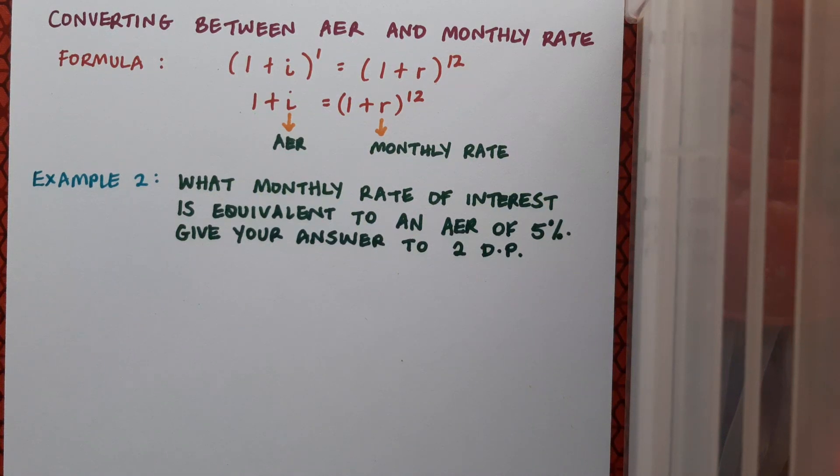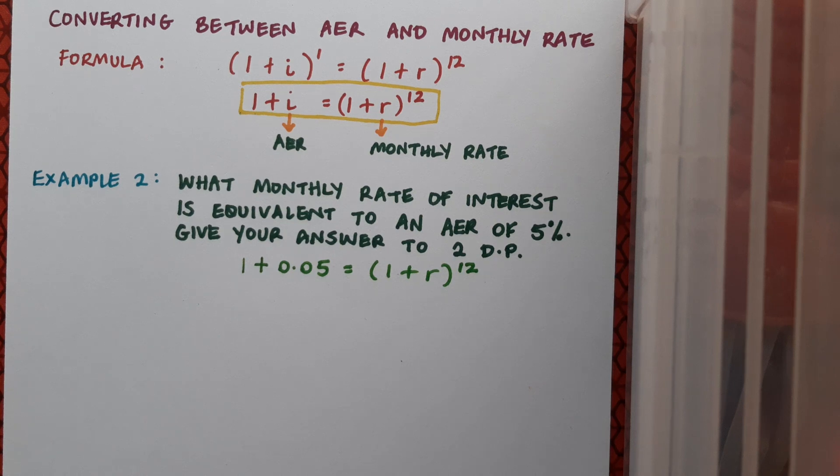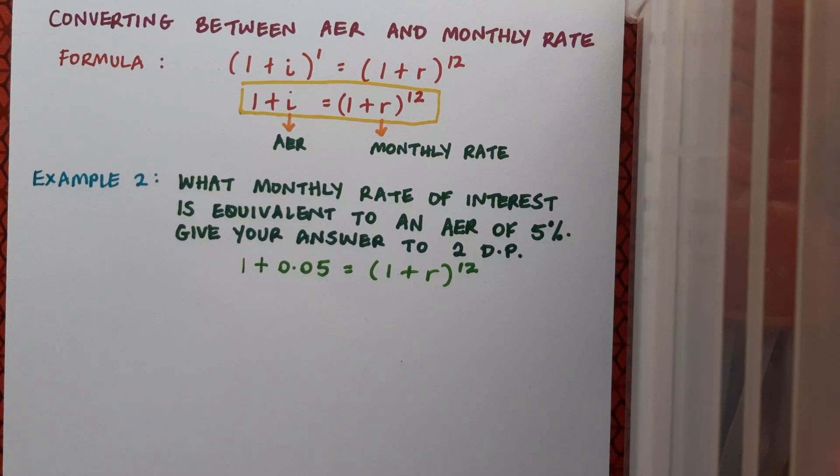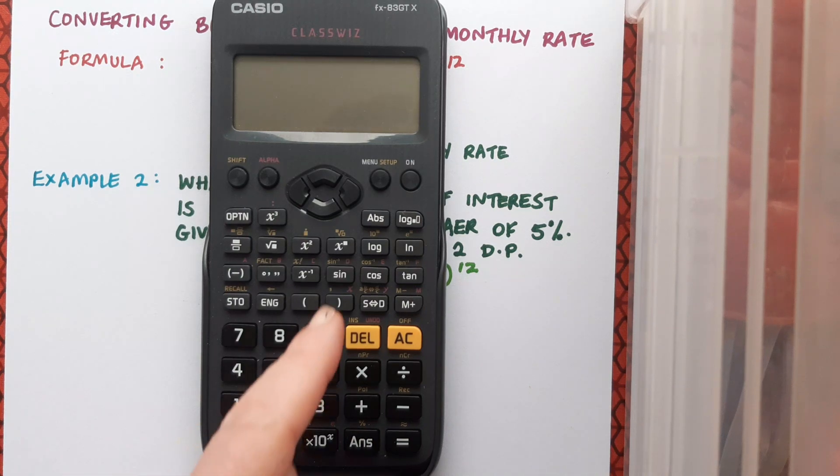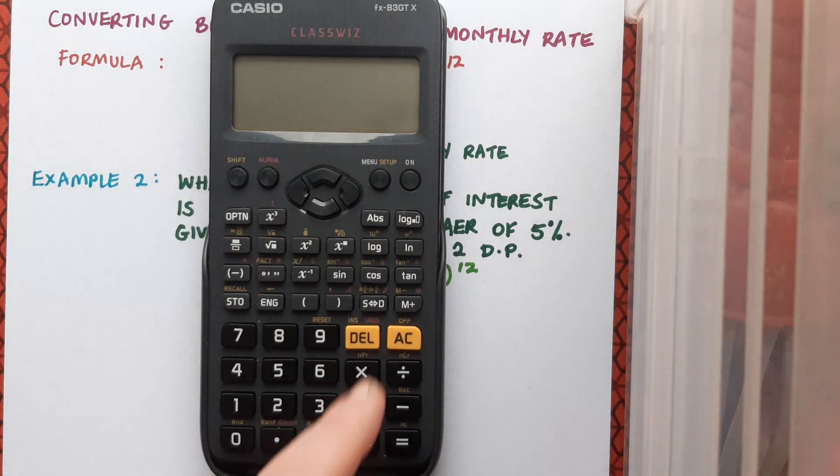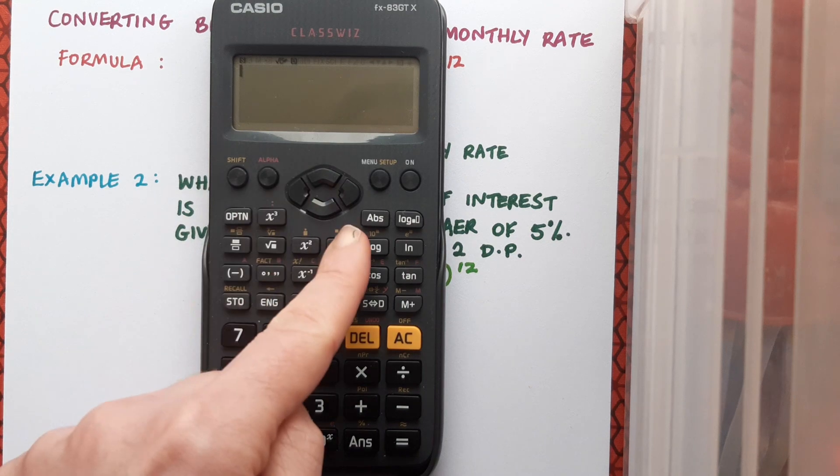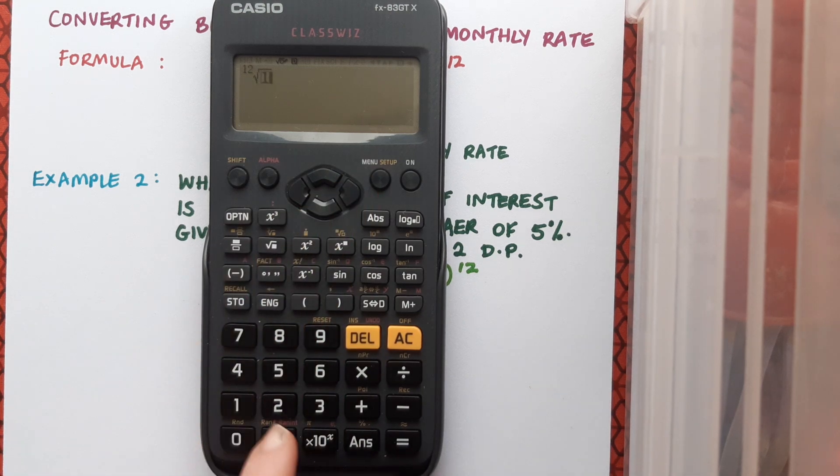So here's an example. What monthly rate of interest is equivalent to an AER of 5% and we want to get the answer correct to two decimal places in this case. Well I'll be using this formula and I know the i but not the r. I've filled it in and note that I've given i in decimal form because we must always change our interest rates into decimals in any calculations. And now I want to calculate r. So I'll get the 12th root of 1.05. I'll use my calculator for this and you can see here that over the power button I can press shift on the power button and it'll allow me to type in the 12th root of 1.05.